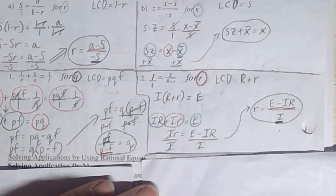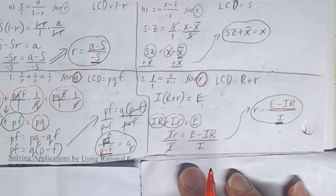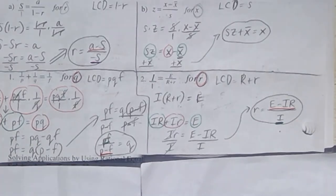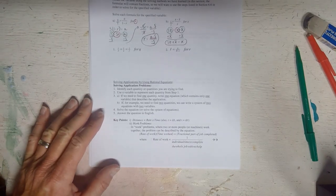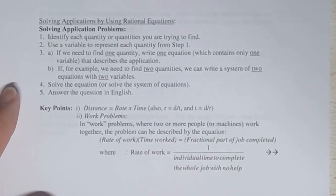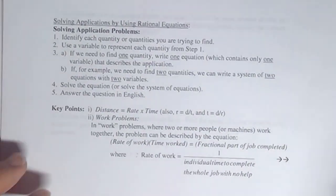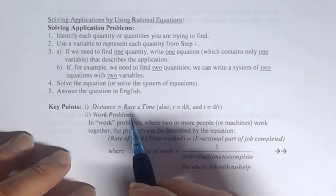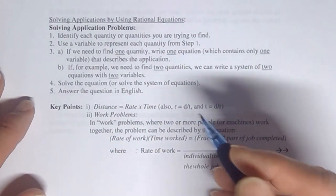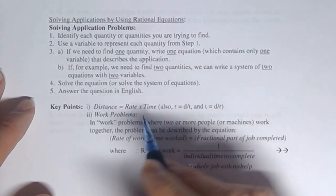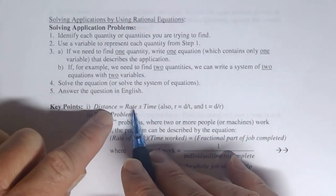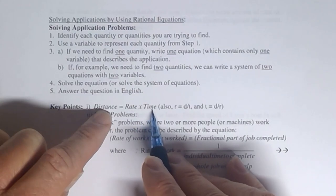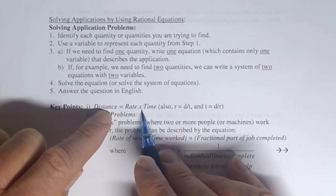We're going to see some word problems coming up in the second part of section 6.7. The first formula we're mainly going to focus on here: distance equals rate times time. The rate is the average speed of an object that travels over a certain distance over a certain period of time. For example, if I'm going on a trip that is 200 miles long and it took four hours, my average speed would have to be 50 miles per hour to cover 200 miles in four hours.